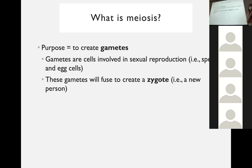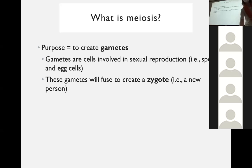Gametes are cells that are involved in sexual reproduction. We're not talking about asexually reproducing organisms like bacteria — just most organisms that are sexually reproducing. For our purposes, if you want to think about it in simpler terms, gametes are sperm cells and egg cells. Those are gametes. And then the gametes will come together and fuse, and what they form is a zygote — basically a new person. One cell, the very beginning of a new person, is a zygote.